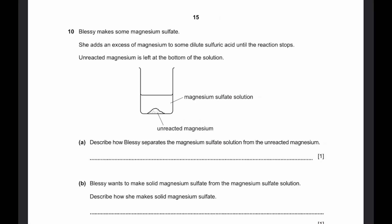Let's go to question 10. Blessie makes some magnesium sulfate. She adds an excess of magnesium to some dilute sulfuric acid until the reaction stops. Unreacted magnesium is left at the bottom of the solution. Describe how Blessie separates the magnesium from the magnesium sulfate solution. Of course she simply filtered it. Or we can write filtration.